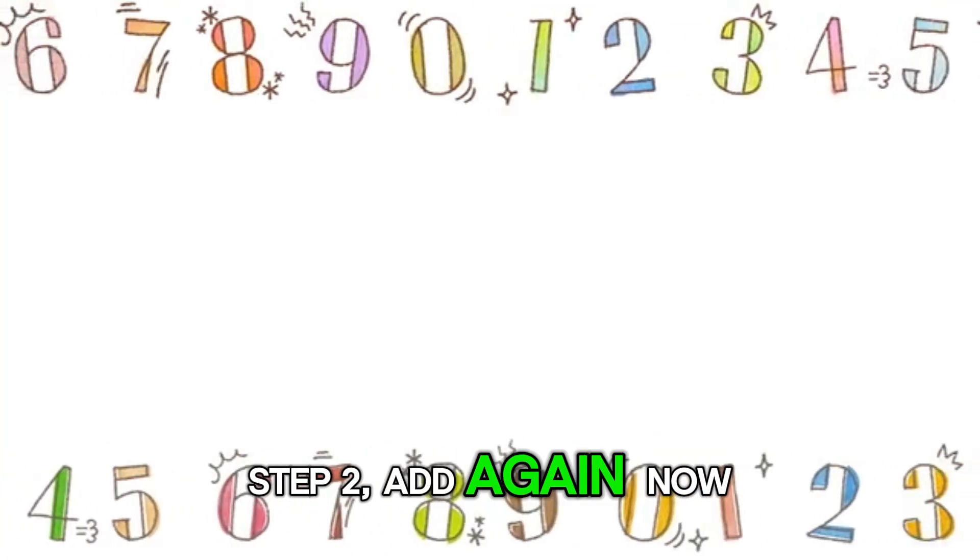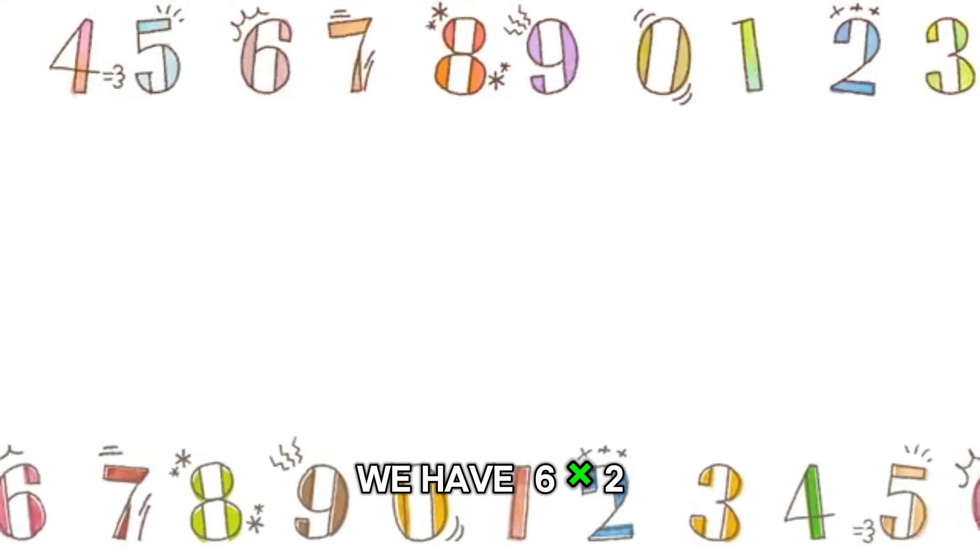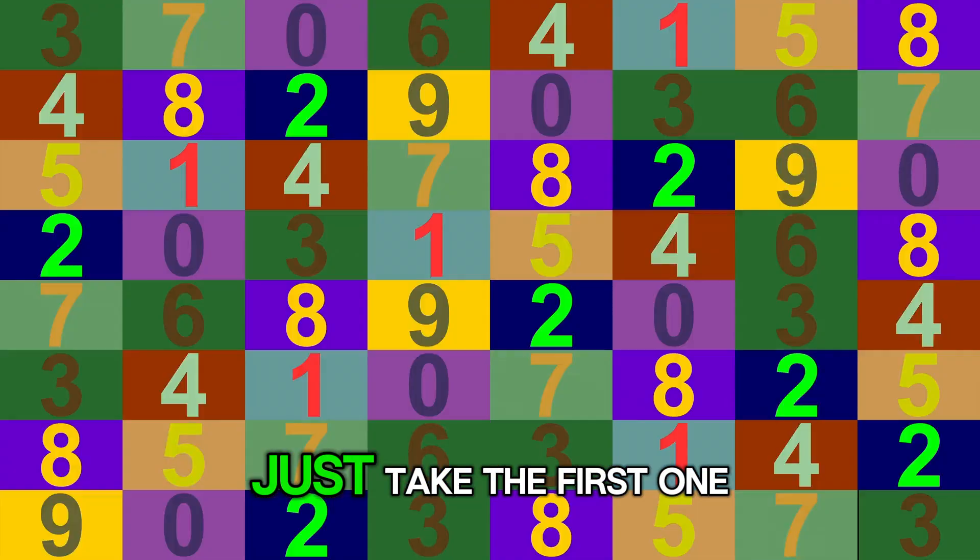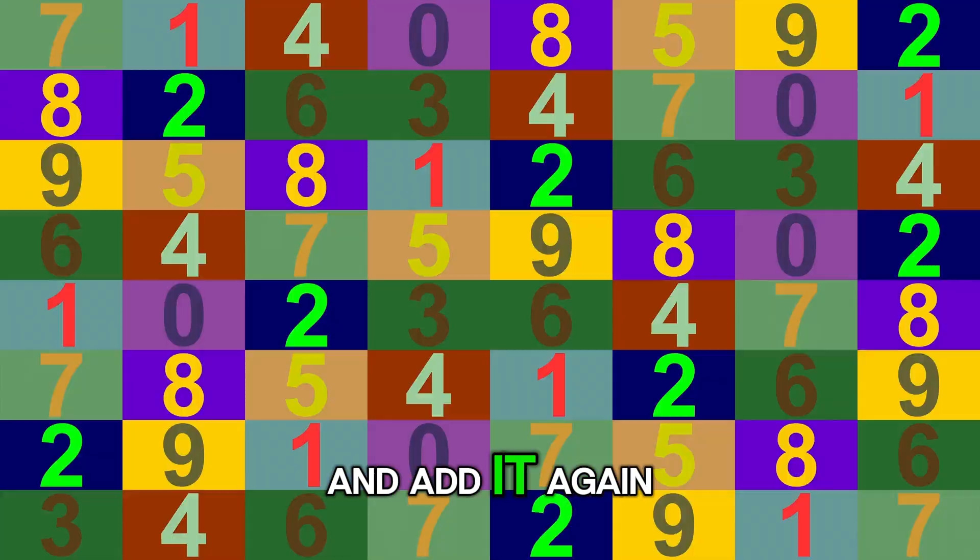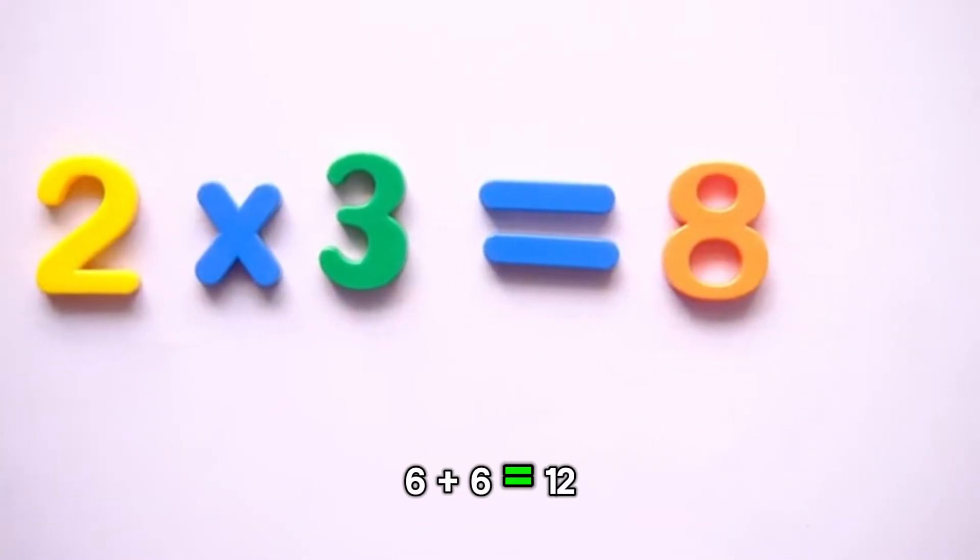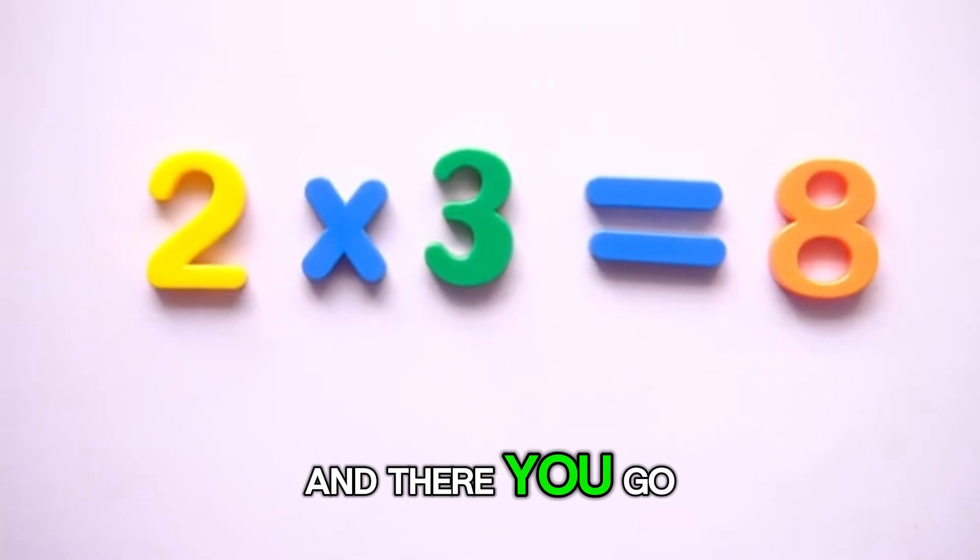Step 2. Add again. Now we have 6 times 2 equals 12. To find the answer, just take the first one, 6 times 1 equals 6, and add it again. 6 plus 6 equals 12. And there you go.